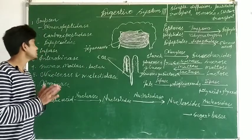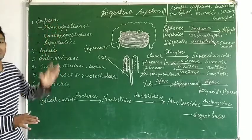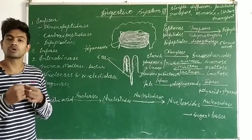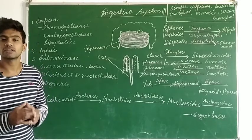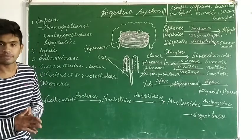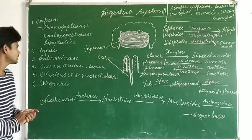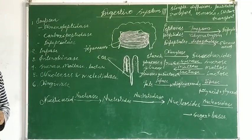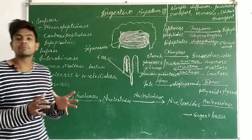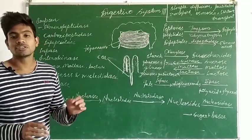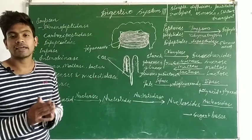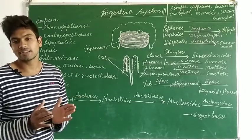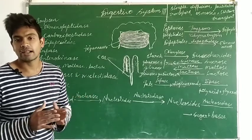So we can say that erepsin is a group of proteolytic enzymes which ends the digestion of protein by converting it into amino acids. The next enzyme is lipase. Lipase is the enzyme which ends the digestion of fats by converting it into fatty acid and glycerol.